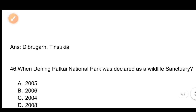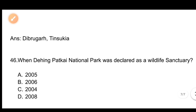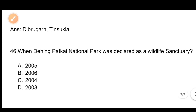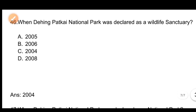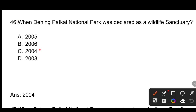Question number 46: When was Dihing Patkai National Park declared as a Wildlife Sanctuary? Options: A) 2005, B) 2006, C) 2004, D) 2008. The correct answer is C, 2004. Dihing Patkai National Park was declared as a Wildlife Sanctuary in 2004.